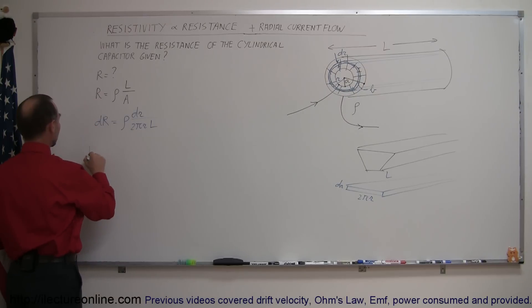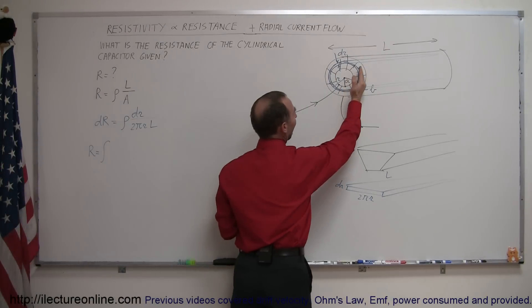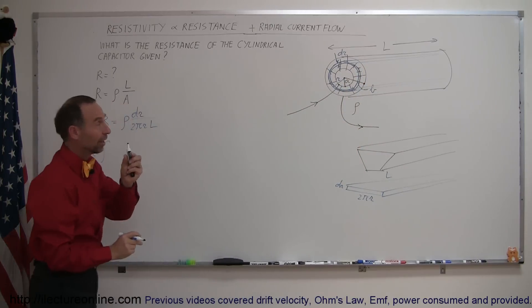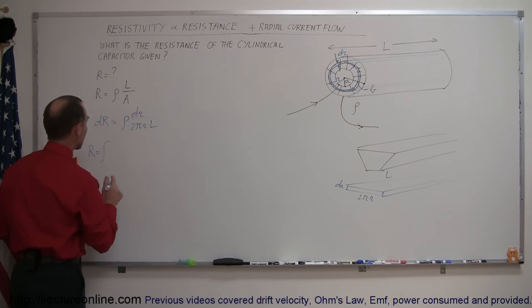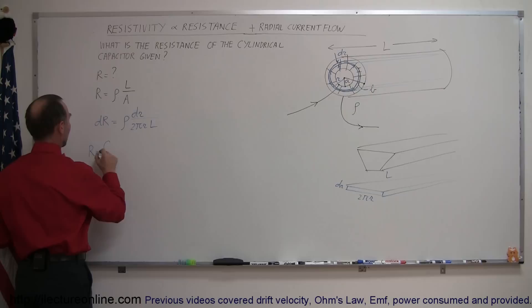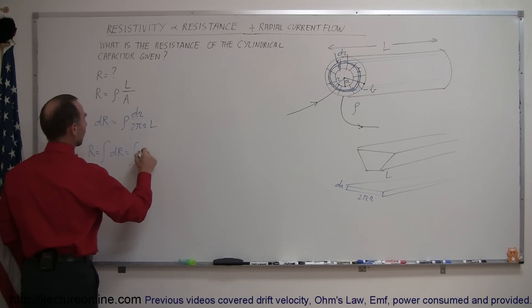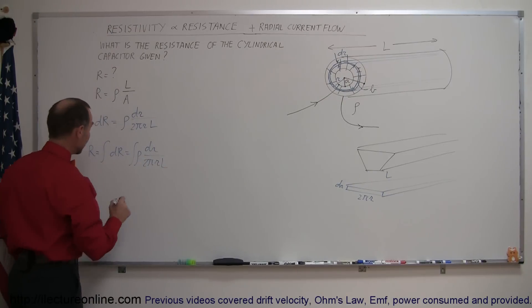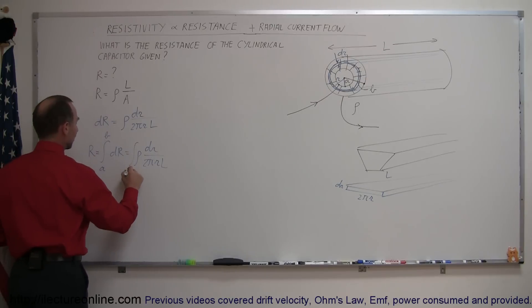And now if I want to find the total resistance that would be equal to the sum of all these little segments. I would then add them all up, an infinite number of little segments with infinitesimally small thickness of dr. So we have r would be integral of all the dr's which would be the integral of rho times dr over 2 pi r L. And of course you want to integrate from A to B, from the inner radius to the outer radius.